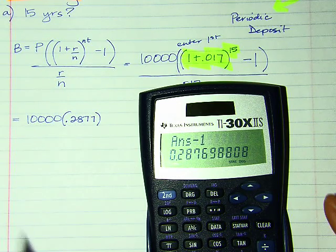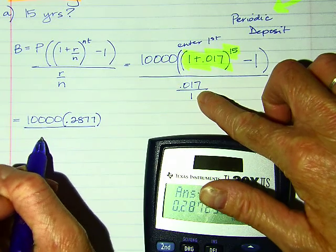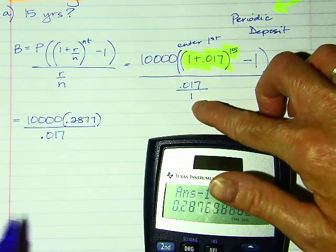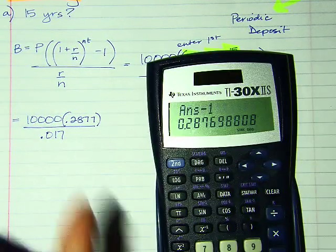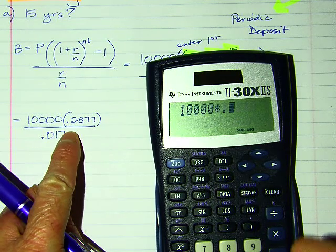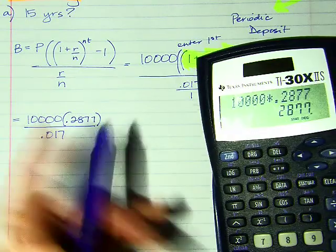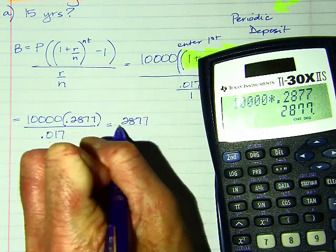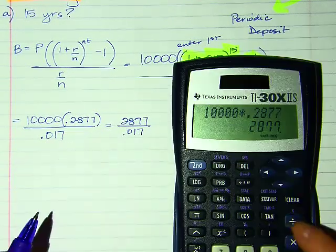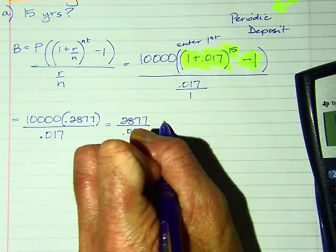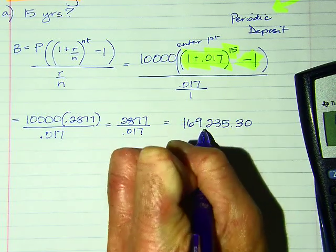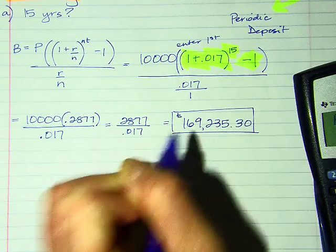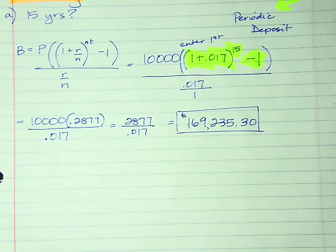Now I simplify the top: 10,000 × 0.2877, then divide by 0.017 — since dividing by 1 is just 0.017. And I get $169,235.30. That is what her account will be worth in 15 years.